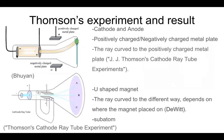This is Thomson's experiment and result. This is the cathode and anode plate, and this is the cathode ray tube, which has no air inside of it — if it does have air inside of it, then it does not work. When he placed the cathode and anode plate like this, the cathode plate just made the ray, and it goes straight.